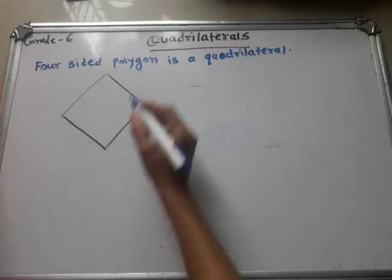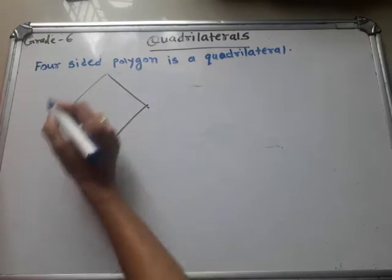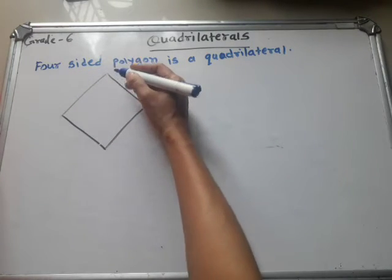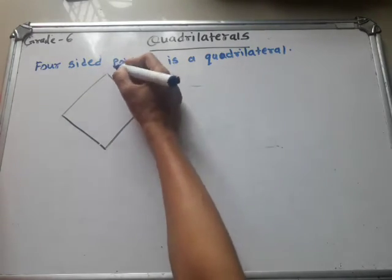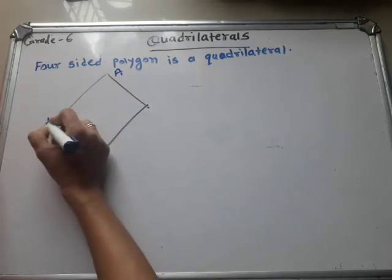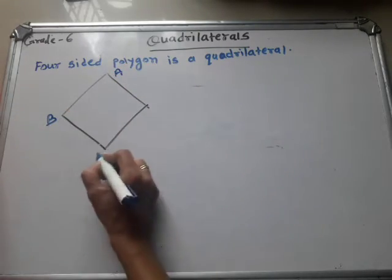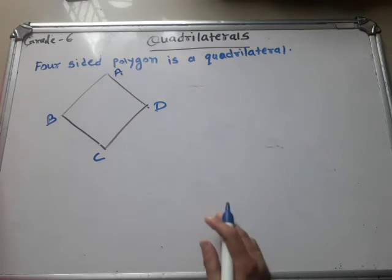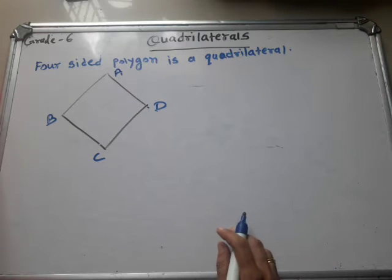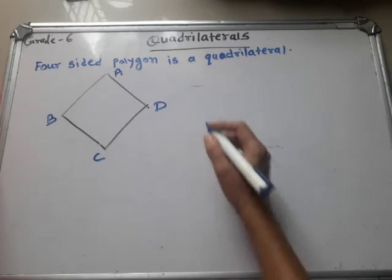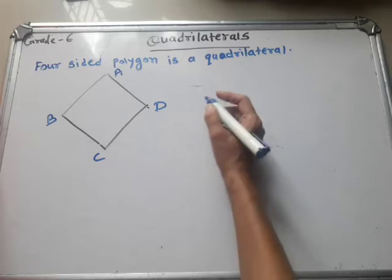Or four angles. So here we write the name of this quadrilateral. We write here A, B, C, D. So how do we show the symbol of this quadrilateral? There is no special symbol.